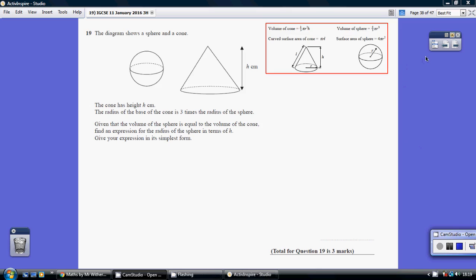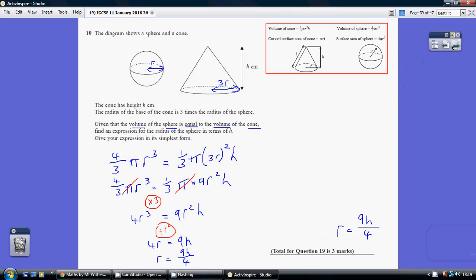Question 19. Now, we're told that the volumes of these two are equal. And we also know that the radius of the cone, base of the cone, is three times the radius of the sphere.